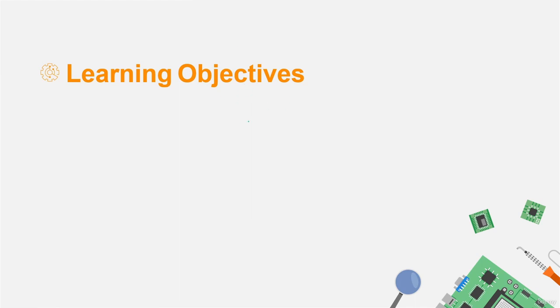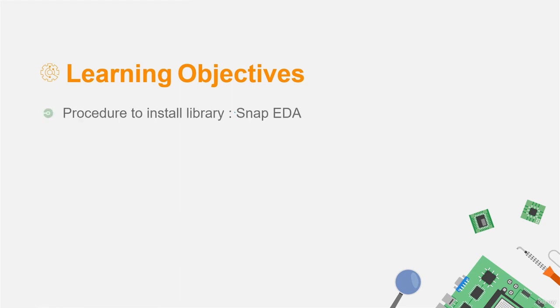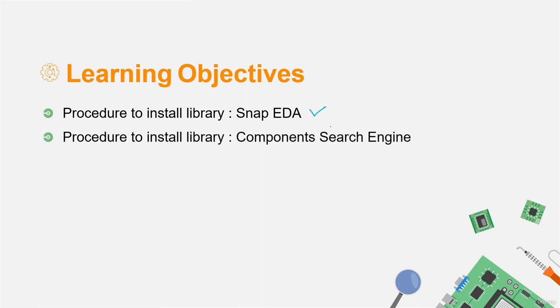Let me tell you what you will learn in this video. In the previous video, we discussed the process to download readily available libraries from external websites. In this video, I will show you how to install those downloaded libraries in the Eagle software — first from the SnapEDA website, and then from the Component Search Engine website.